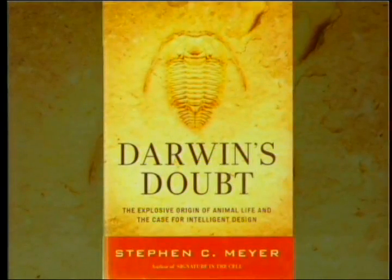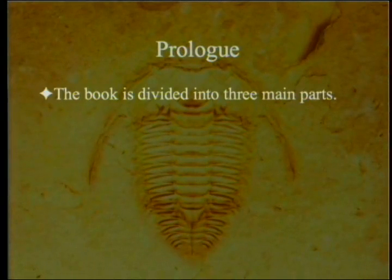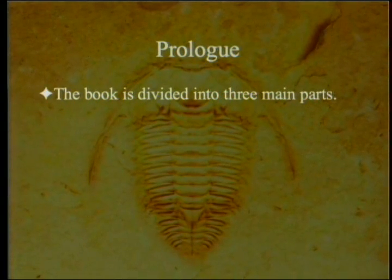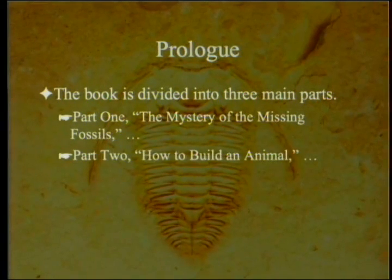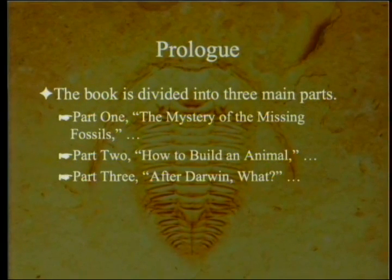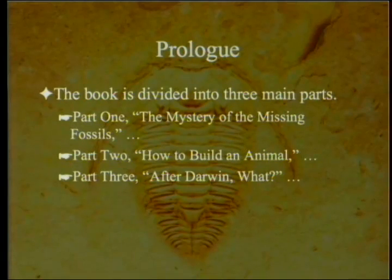There's the cover of the book itself. According to the prologue, the book is divided into three main parts: Part One, the mystery of the missing fossils; Part Two, how to build an animal; and Part Three, after Darwin, what? And we're into the middle of Part Three.